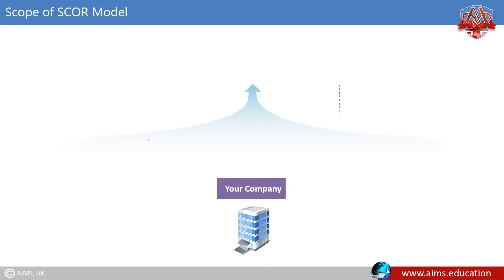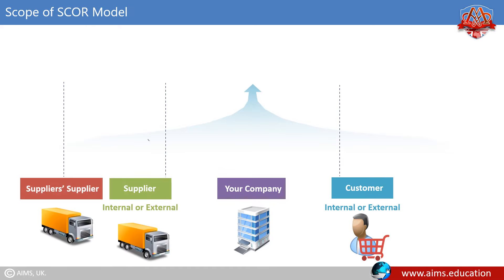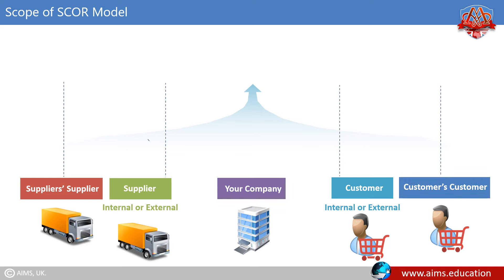The scope of the SCOR model covers all business activities associated with satisfying a customer's demand. The model is organized around five primary management processes: Plan, Source, Make, Deliver, and Return. Using these process building blocks, the model can describe both simple and complex supply chains.